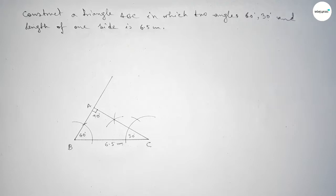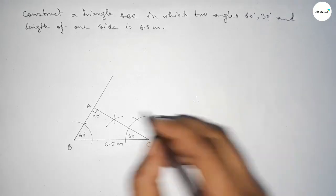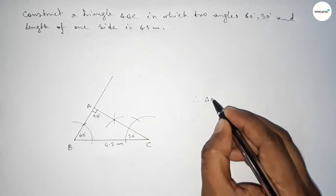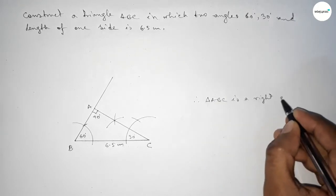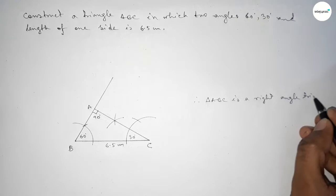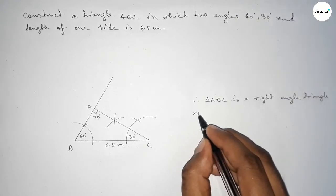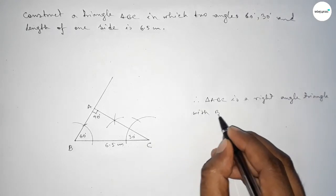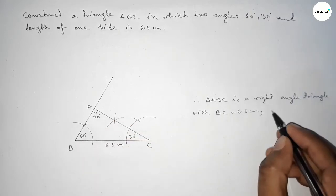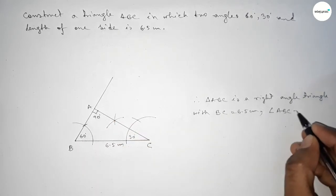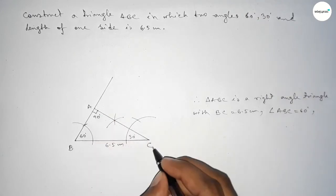Since 30 plus 60 equals 90, and 90 plus 90 equals 180, therefore triangle ABC is a right angle triangle with given side here BC equal to 6.5 centimeters, angle ABC equal to 60 degrees.